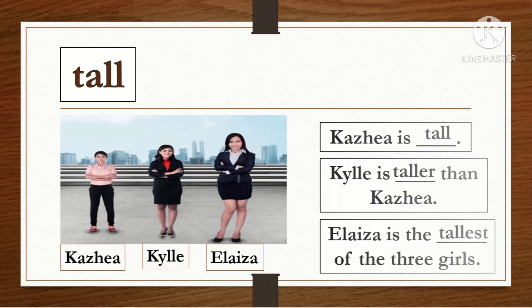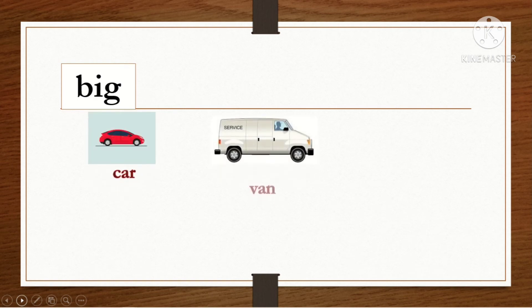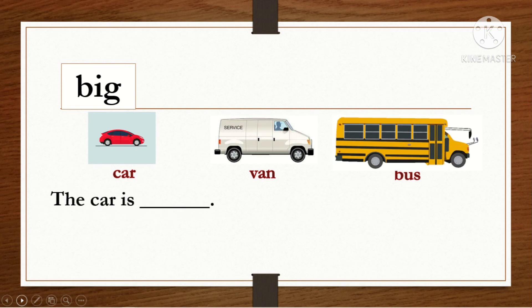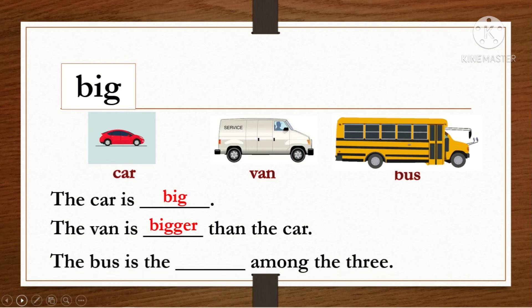Next example. The adjective is big. Look at the pictures: car, van, bus. The car is big. The van is bigger than the car. The bus is the biggest among the three.